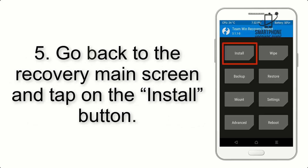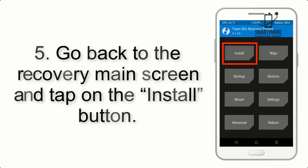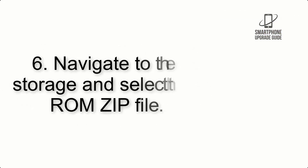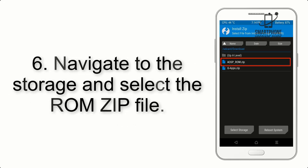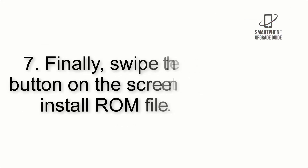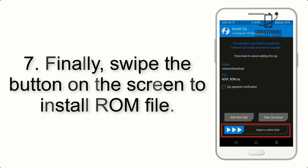Step 4: Swipe the button to wipe the device. Step 5: Go back to the recovery main screen and tap on the Install button. Step 6: Navigate to the storage and select the ROM zip file.